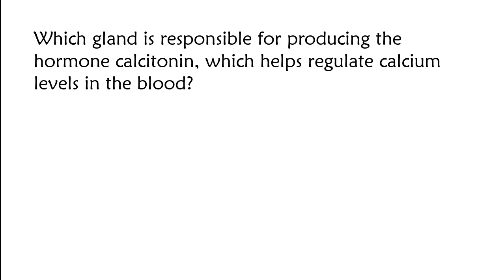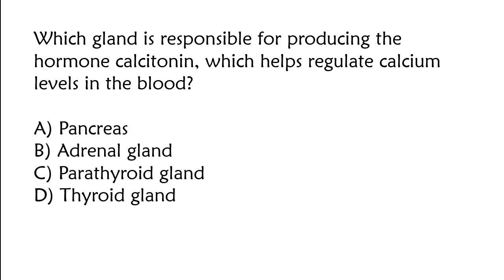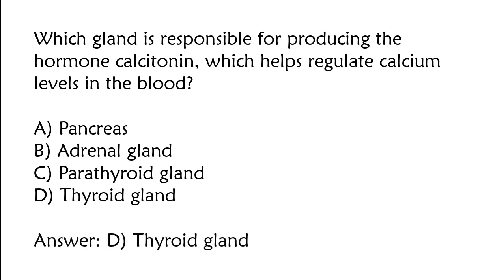Which gland is responsible for producing the hormone calcitonin, which helps regulate calcium levels in the blood? Pancreas, adrenal gland, parathyroid gland, thyroid gland. The correct answer is Option D: Thyroid gland.